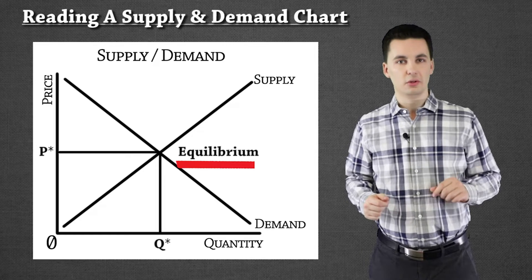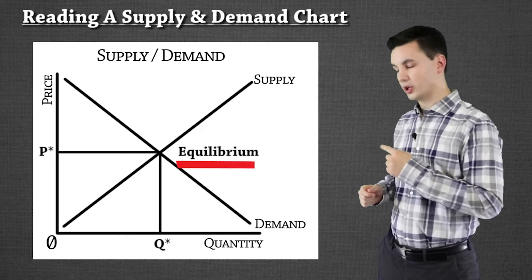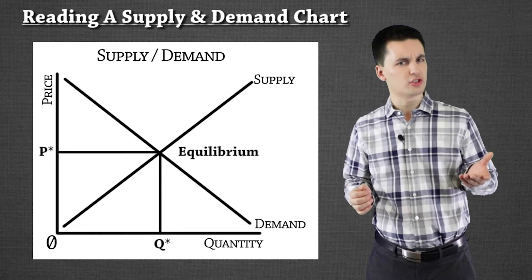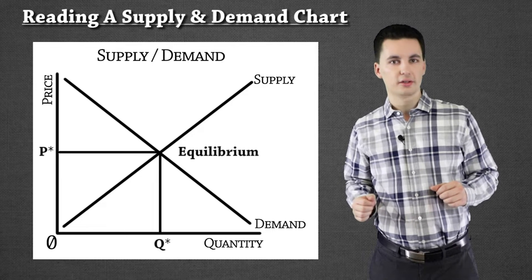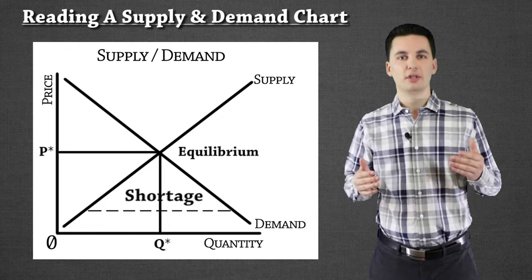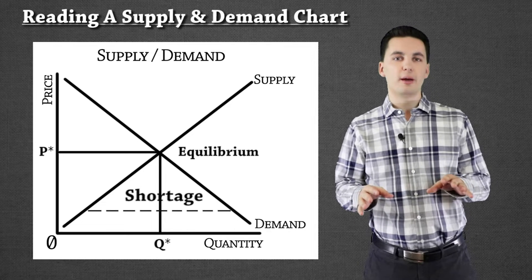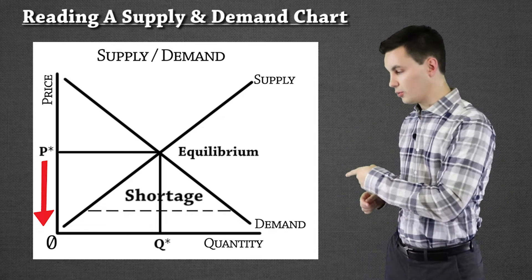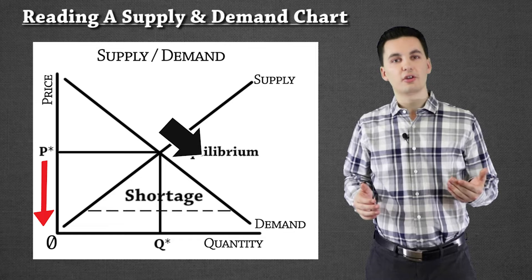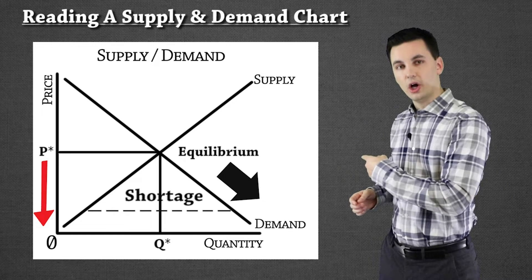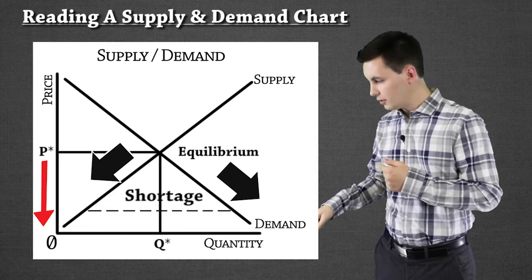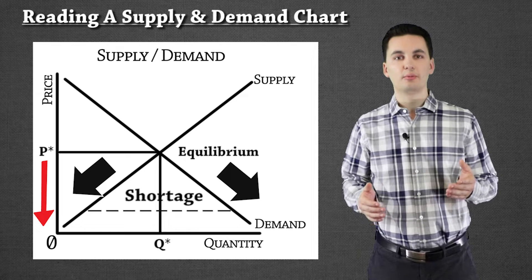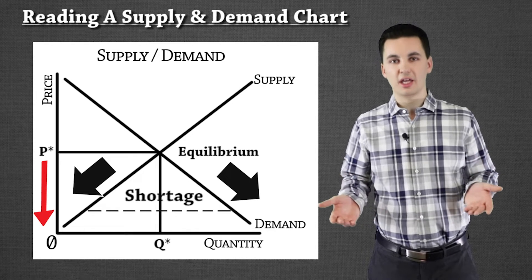The other thing to understand is the equilibrium — that's our X marks the spot. This is where we have no shortage or surplus. If I have a shortage, I'm not going to have enough products for everyone to buy. Normally that means my price was too low. If I sell below the equilibrium and decrease my price, demand goes up while supply goes down, so we have more people wanting to buy than people willing to sell — that's a shortage.